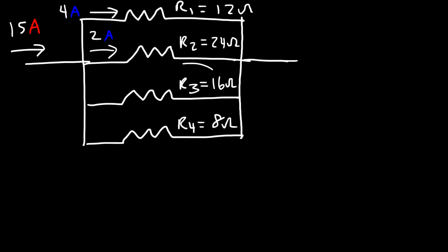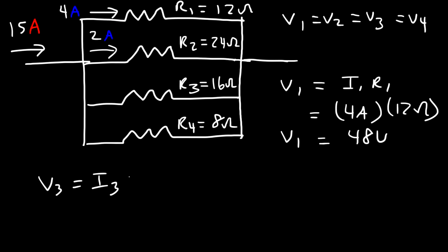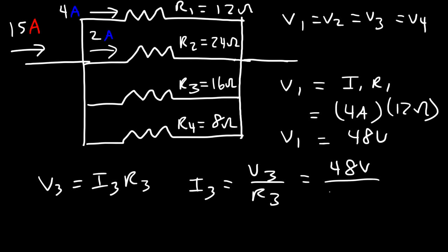For I3, recall that the voltage across each parallel resistor is the same. V1 = I1 times R1 = 4 amps times 12 ohms = 48 volts. Since V3 equals V1 = 48 volts, we can find I3 by dividing voltage by resistance: I3 = 48 volts divided by 16 ohms = 3 amps.